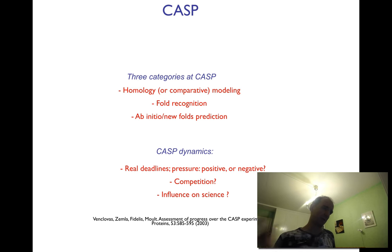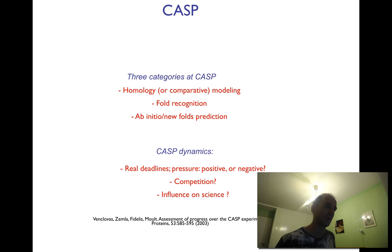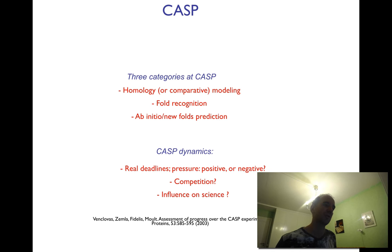Traditionally CASP was divided into three categories: homology modeling, comparative modeling, and new fold prediction. Nowadays the first two categories have more or less merged because the techniques are not so easy to distinguish.